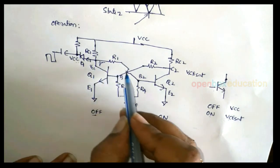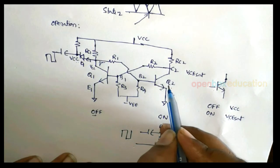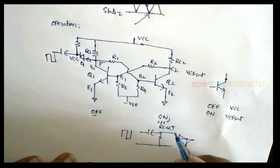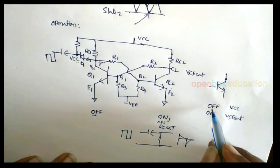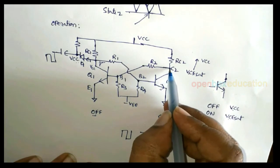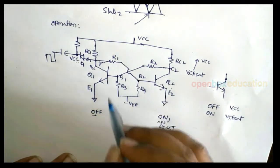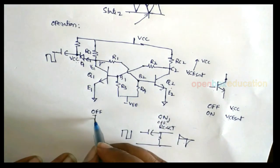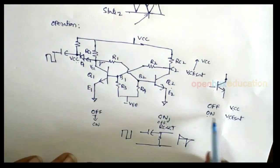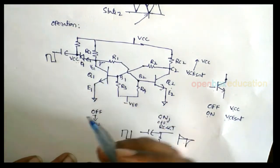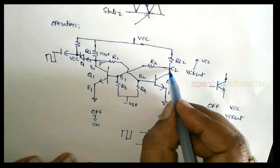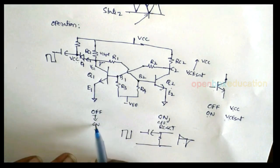Already the voltage at C1 is VCC. VCC plus negative spikes gives a low voltage. That low voltage is applied to Q2, so Q2 goes from ON to OFF. When Q2 is OFF, the voltage at C2 jumps to VCC. VCC is applied to Q1 — high voltage — so Q1 goes to ON. When Q1 is ON, the voltage at its collector becomes VCE(sat). So now voltage at C1 is VCE(sat) and voltage at C2 is VCC — this is the other state: Q1 ON, Q2 OFF.